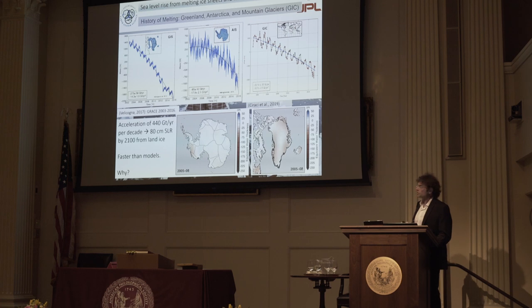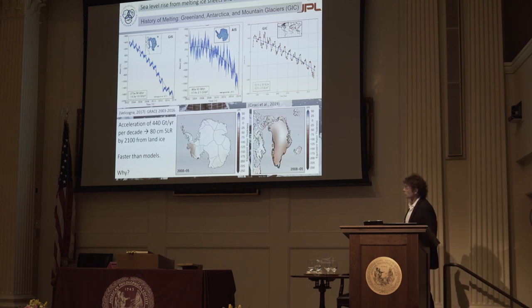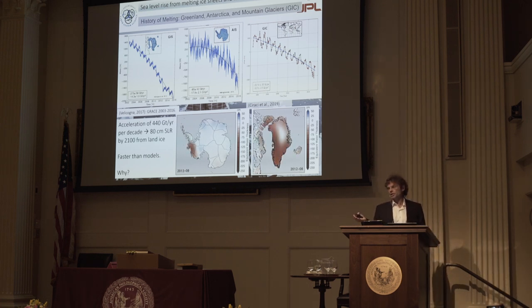We measure the evolution of the ice sheet with a multitude of instruments these days, mostly satellites. We measure the height of the surface and how it changes over time. We measure the speed of the glaciers with interferometry techniques so we can monitor how fast they move. And we have the GRACE gravity mission since 2002, which is the equivalent of putting the ice sheet on a scale and seeing how the weight changes with time.